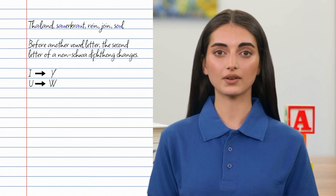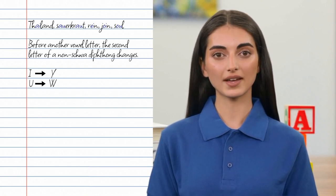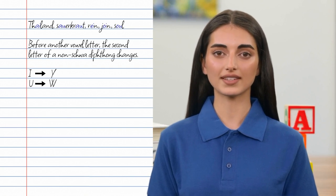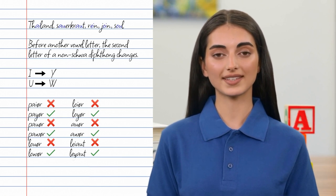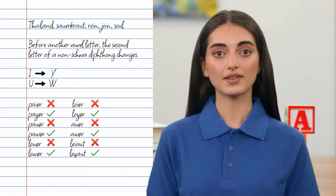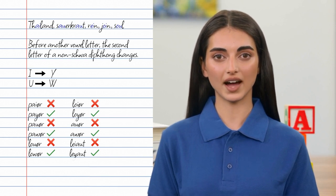If a diphthong ends with an I or U, the second component changes respectively to a Y or W whenever it immediately precedes another vowel letter. This is demonstrated by the RLS spellings of these words, read in two columns: pyre, power, loa, loya, oua, layout.